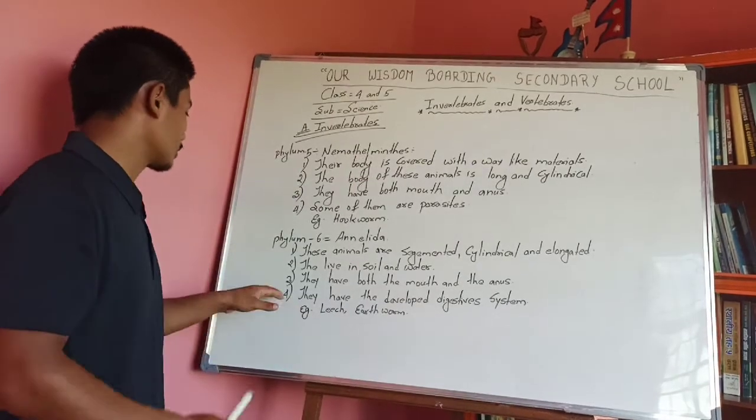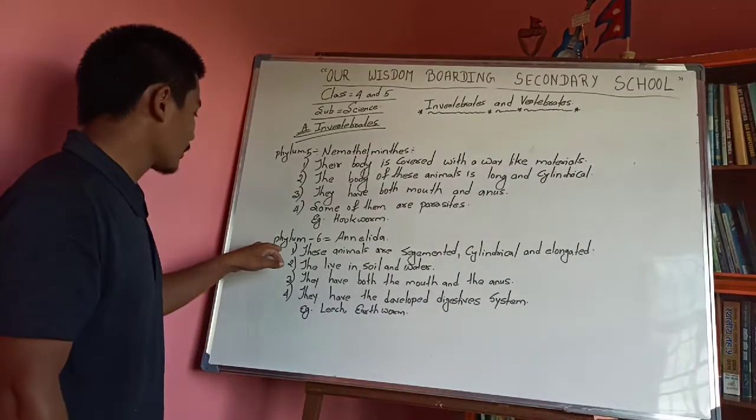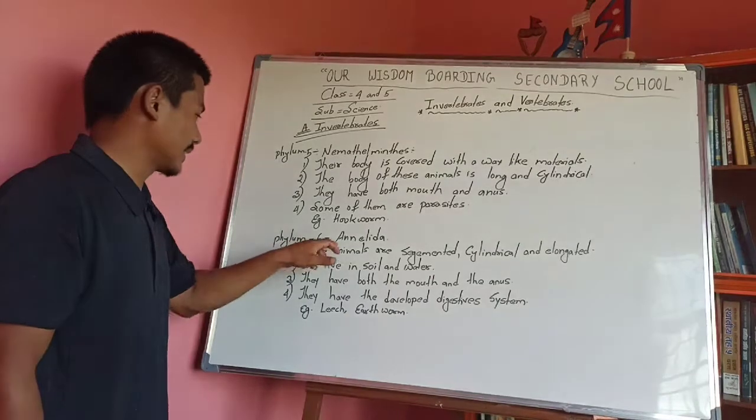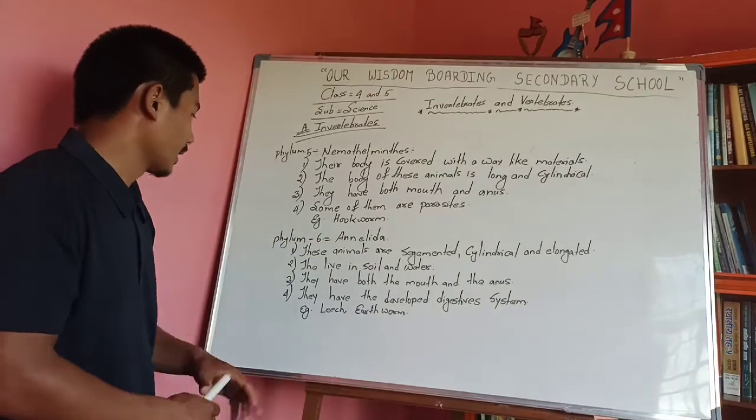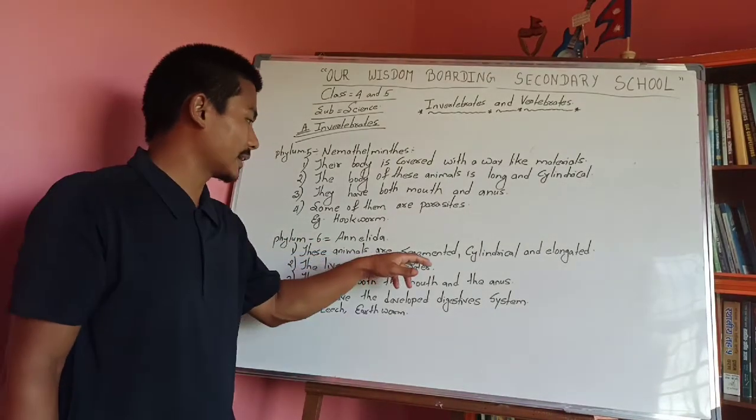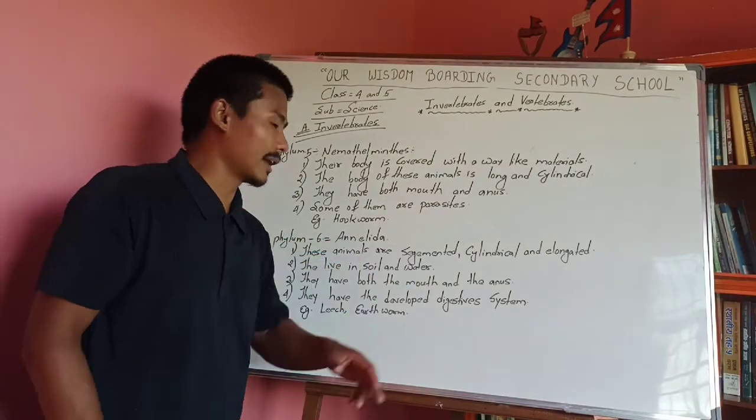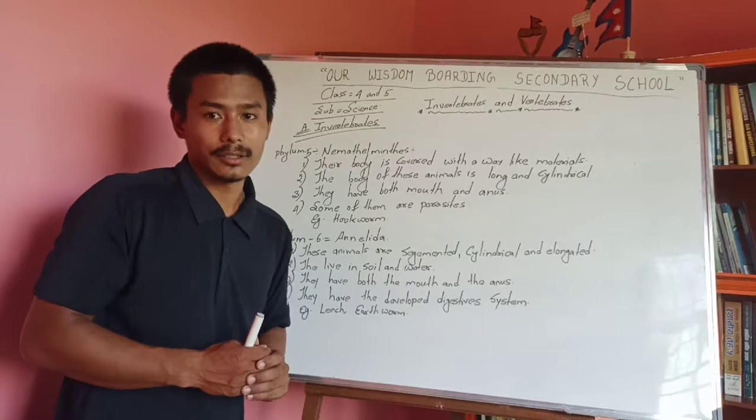Phylum 6 is Annelida. These animals are segmented, cylindrical and elongated.